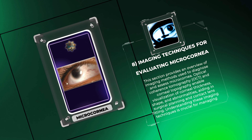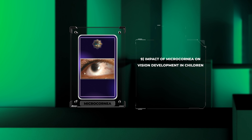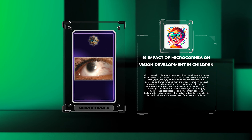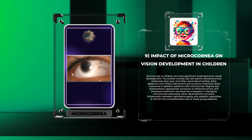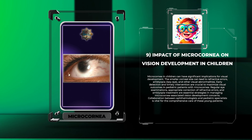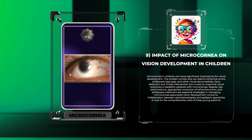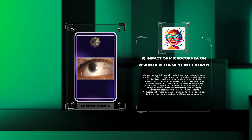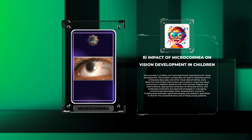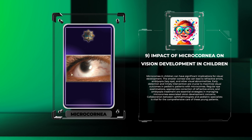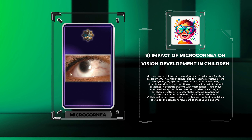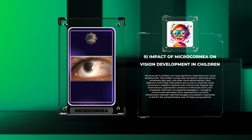Microcornea in children can have significant implications for visual development. The smaller corneal size can lead to refractive errors, amblyopia (lazy eye), and other visual abnormalities. Early detection and timely intervention are crucial to maximize visual outcomes in pediatric patients. Regular eye examinations, appropriate correction of refractive errors, and amblyopia treatment are essential strategies. Collaboration between ophthalmologists and pediatric specialists is vital for the comprehensive care of these young patients.